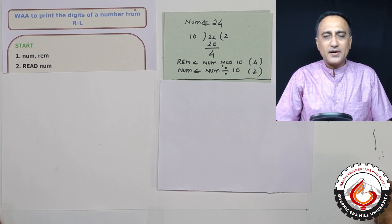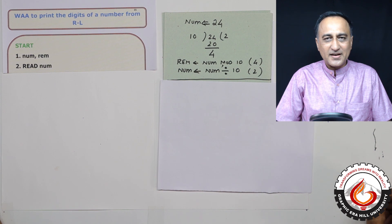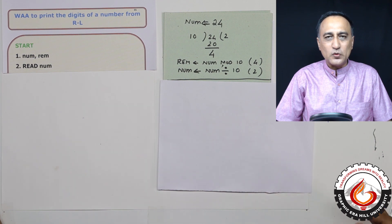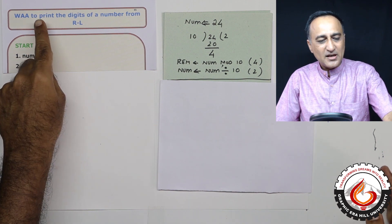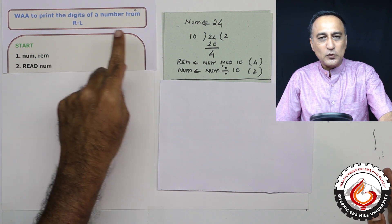We shall now take a look at a problem which involves getting or extracting the individual digits of a whole number. Let's say the number is 62. So first I'll print 2 followed by 6. That's why I'm saying write algorithm to print the digits of a number from right to left.